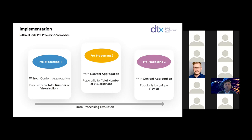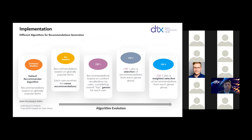On the other side, we have developed three different algorithms. The first — the company baseline and DTX baseline — are basically simple algorithms presenting globally popular items to each user, so each user receives the same recommendations. A slight difference between company and DTX baseline is that in the DTX baseline, we have applied the different pre-processing methods just mentioned, and then these three types of recommendation generation systems are applied.